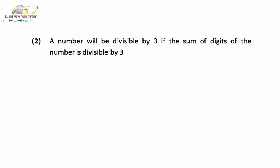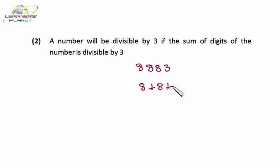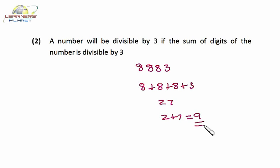Now suppose I have the number 8883 and I have to check whether it is divisible by 3 or not. Add 8 plus 8 plus 8 plus 3: so 8 plus 8 is 16, plus 8 is 24, plus 3 is 27. 27 is divisible by 3. That means 8883 is divisible by 3. You can even repeat the process and add the digits of 27: 2 plus 7 equals 9, and 9 is divisible by 3, hence 27 is divisible by 3, and finally 8883 is divisible by 3. You can repeat the process until you are comfortable with the final number.